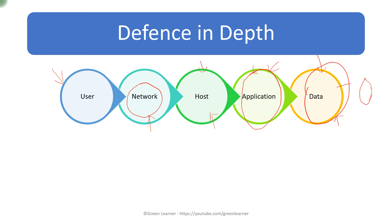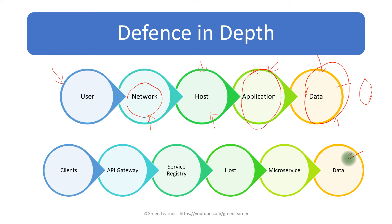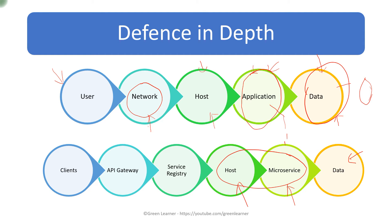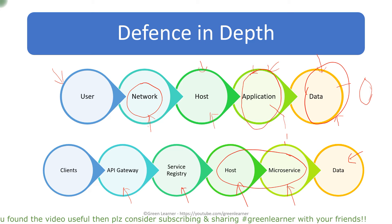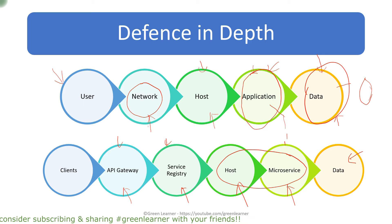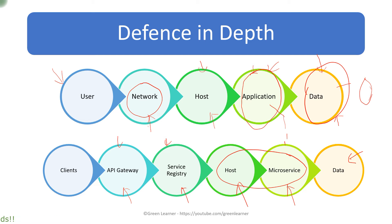The key point here is that the application developer should not assume the host is secured, and the database team should not assume the application is secured. The responsibility of each team must be understood properly and security at each layer must be taken care of. In a microservices architecture, in addition to the general layers, the service registry must be secured, and the API gateway — which gives clients access to the application — must also be secured separately. Security at every layer is the meaning of defense in depth.